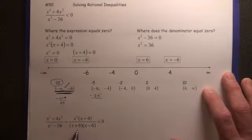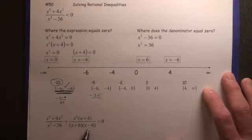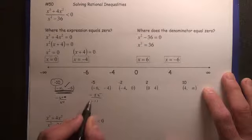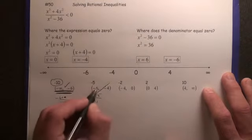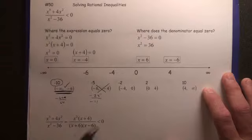so -25 over 1 times -11, which is -11, therefore positive, therefore not the correct answer because we want less than 0.